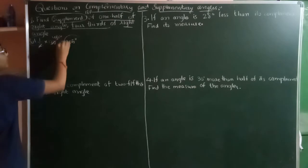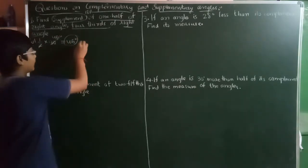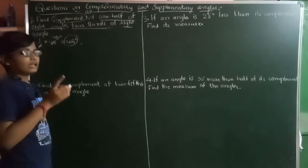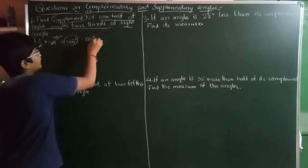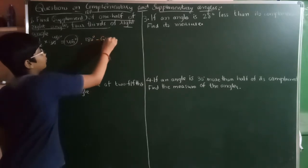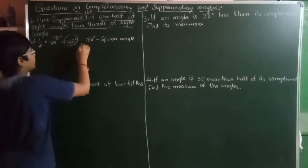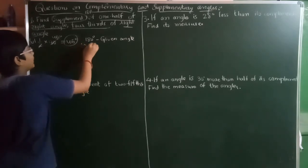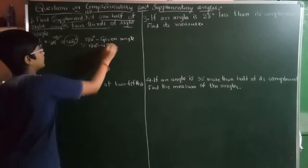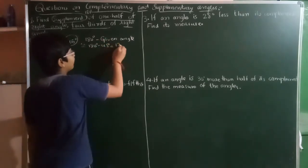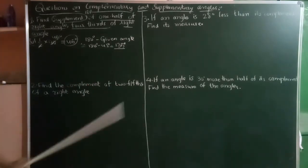Now we should find the supplement of this. Supplement of any angle will be 180 degrees minus the given angle. Given angle is 45 degrees. We get 180 degrees minus 45 degrees, that is 135 degrees. So the supplement of 45 degrees is 135 degrees.